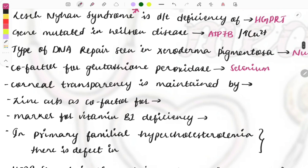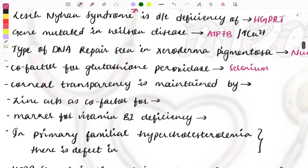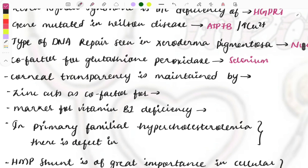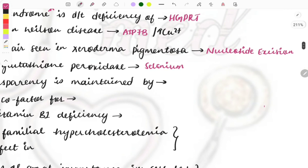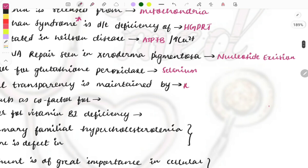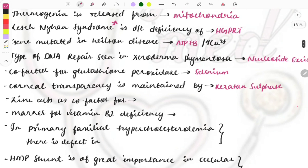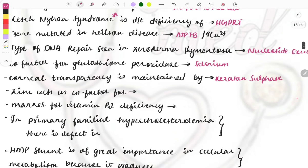The corneal transparency is maintained by which glycosaminoglycan? It is the keratan sulfate. Keratan sulfate will be maintaining this corneal transparency, again a repeat topic.